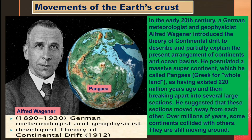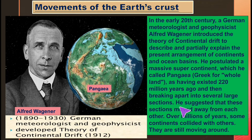He postulated a massive supercontinent which he called Pangaea — in Greek meaning 'whole land' — as having existed 220 million years ago, and then breaking apart into several large sections. He suggested these sections moved away from each other over millions of years, and some continents collided with others, and they are still moving.